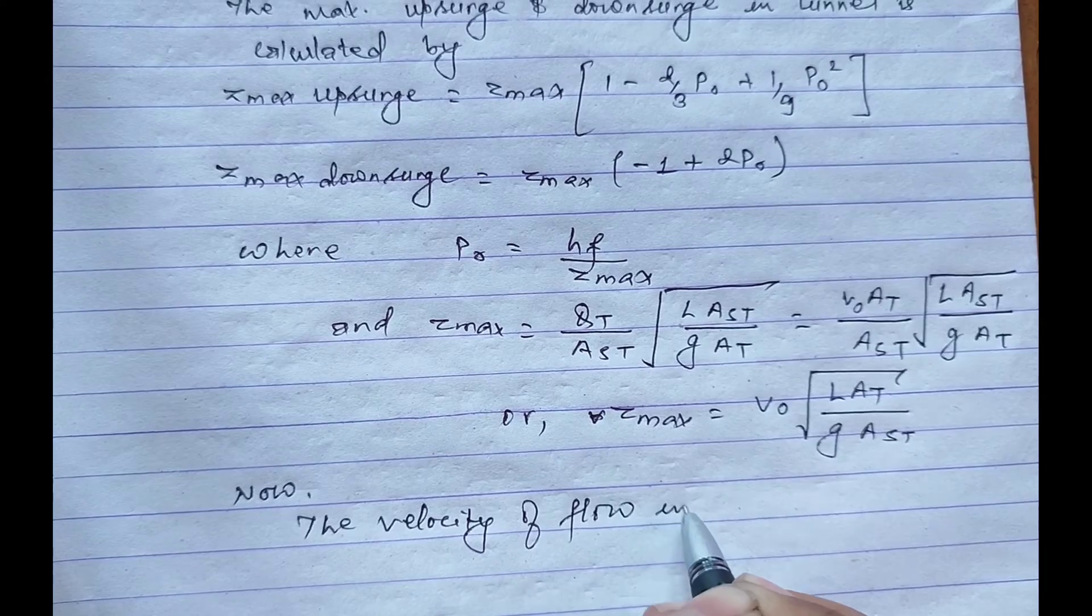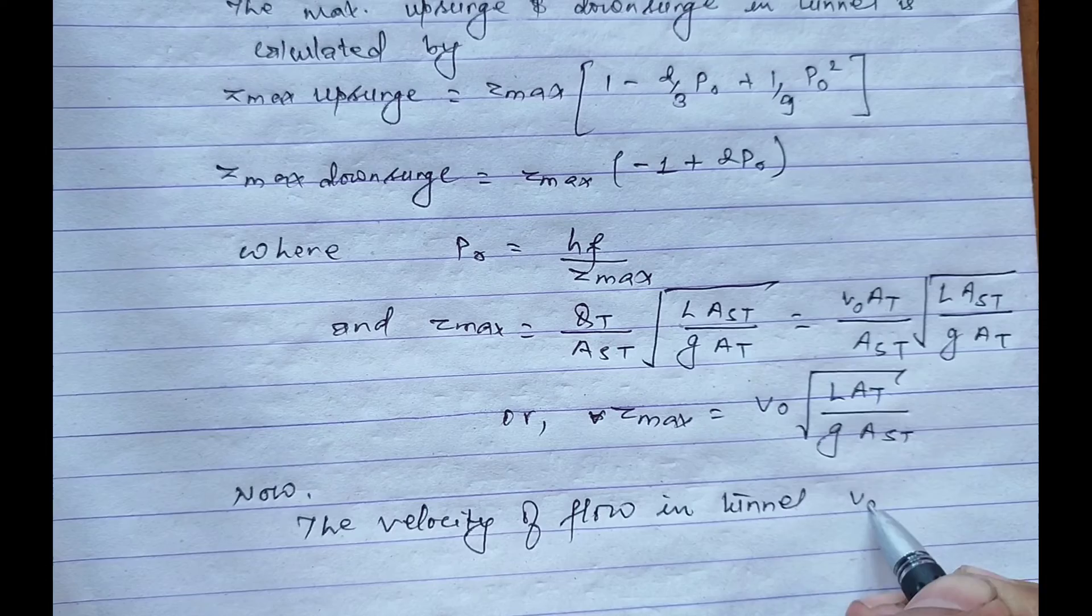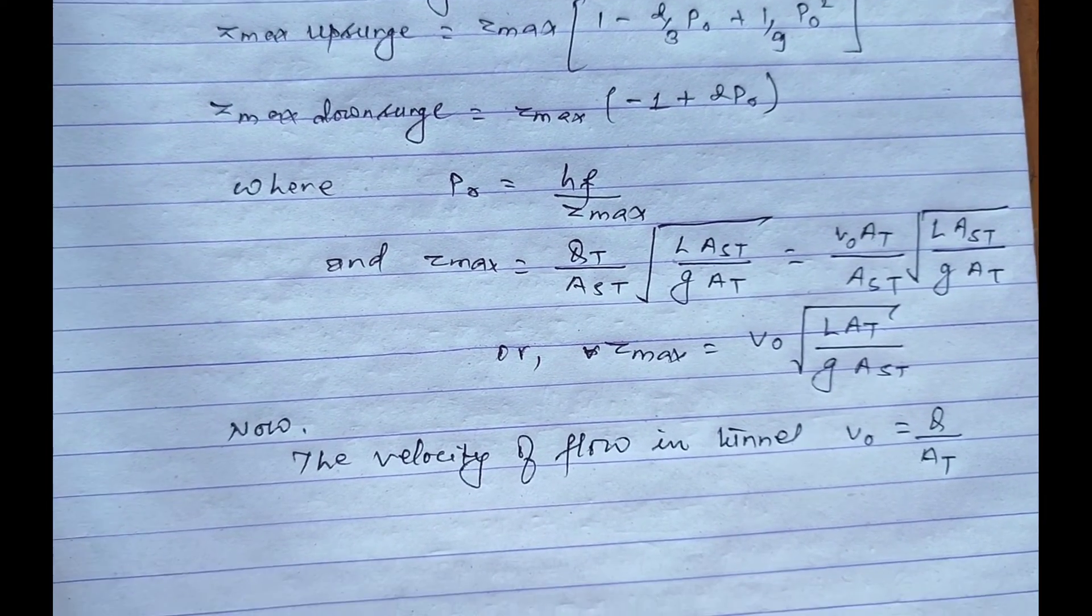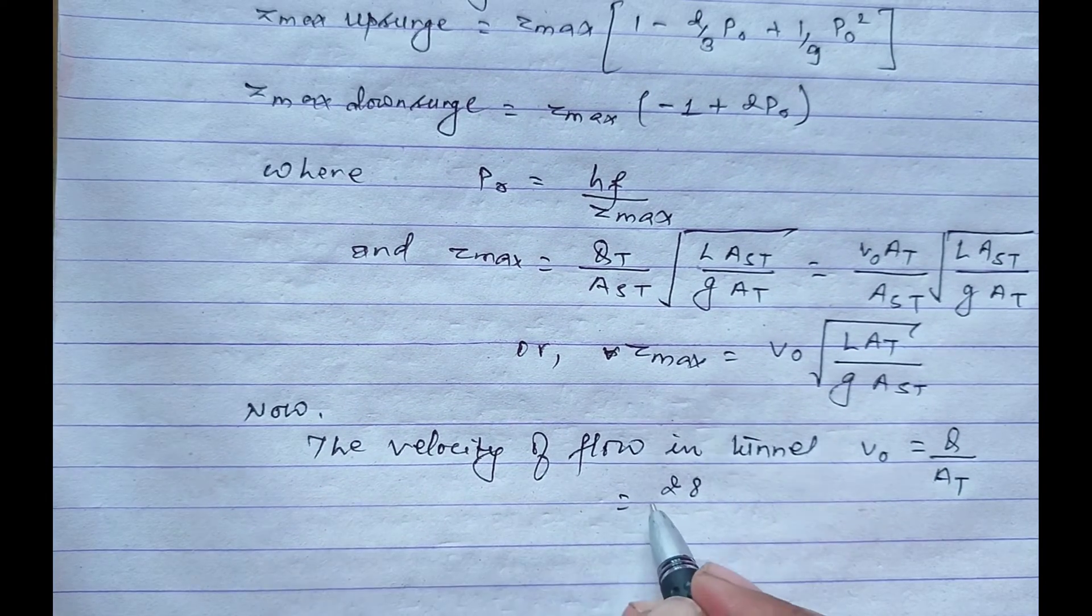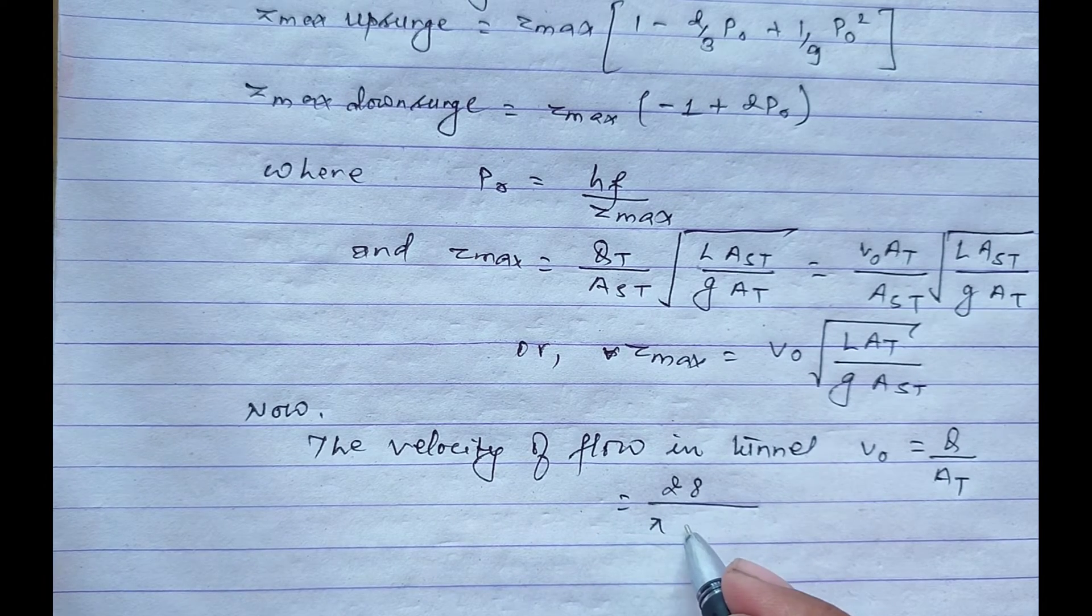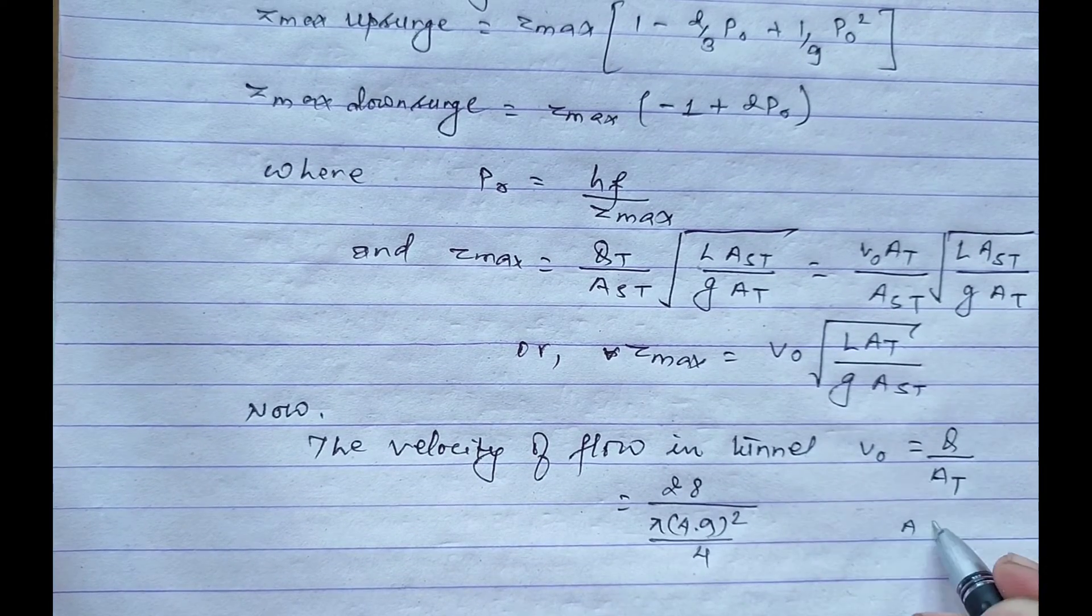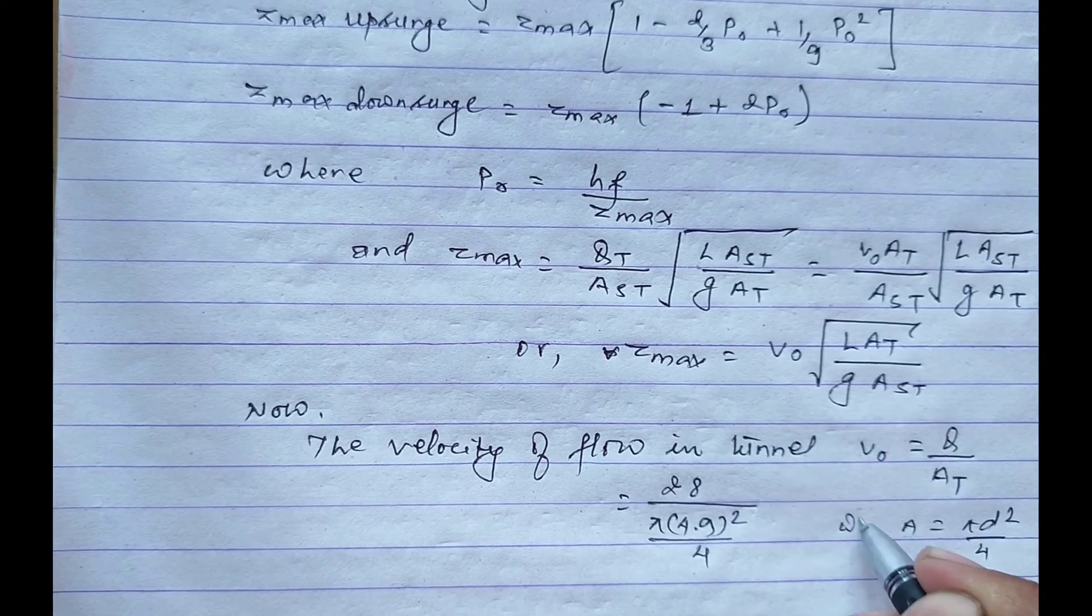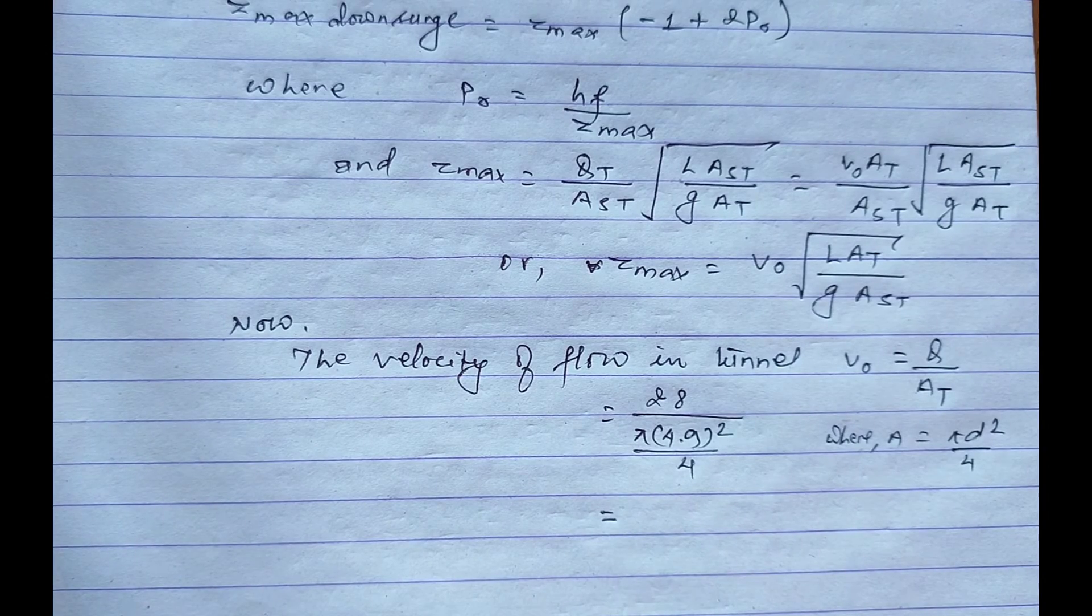Now the velocity of flow in tunnel v_0 equals Q divided by A_t, that is discharge by area. Placing the values: discharge is 28 divided by pi times d square, 4.9 square divided by 4, which equals 1.4848 meters per second.